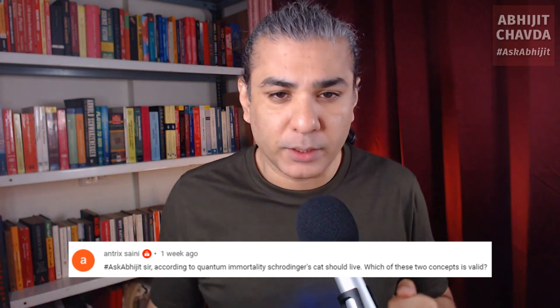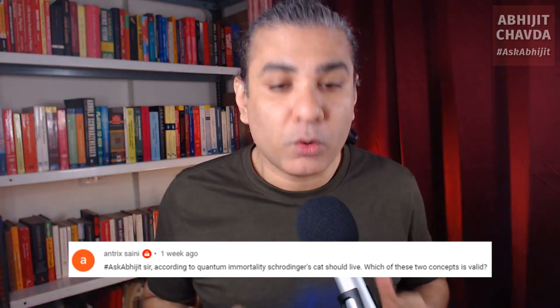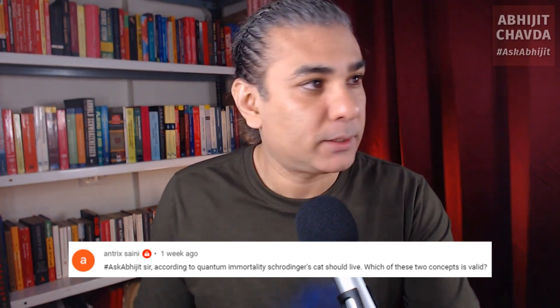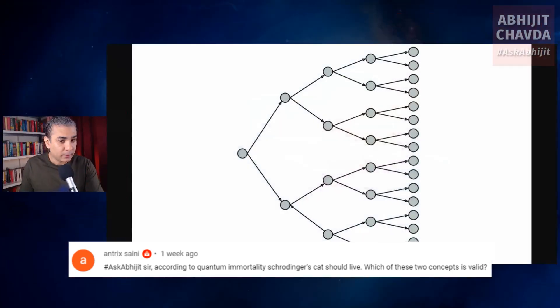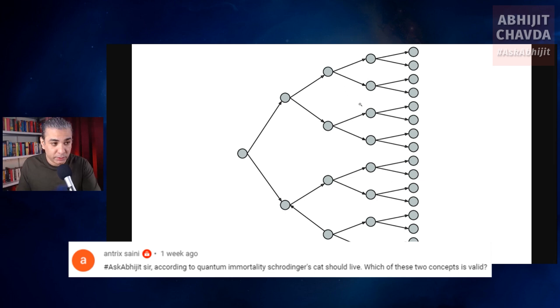Essentially, it says that every time you make a decision or a choice, the world splits — your world line splits into two branches. For example, this is you. When you make a choice, let's say you are flipping a coin and you see the result is heads, that is the result for you. But in another parallel universe, you go to tails. And every time you flip a coin or make any choice in your life, the world line keeps branching off into several branches in this manner.